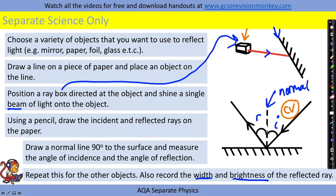The thing that we'd be changing is the objects that we are reflecting from and the thing that we are going to be measuring, well there'll be several things. We'll be measuring the angle of reflection but we might also be recording the width of the ray and the brightness of the ray as well. So there may be several things we're recording in this experiment.